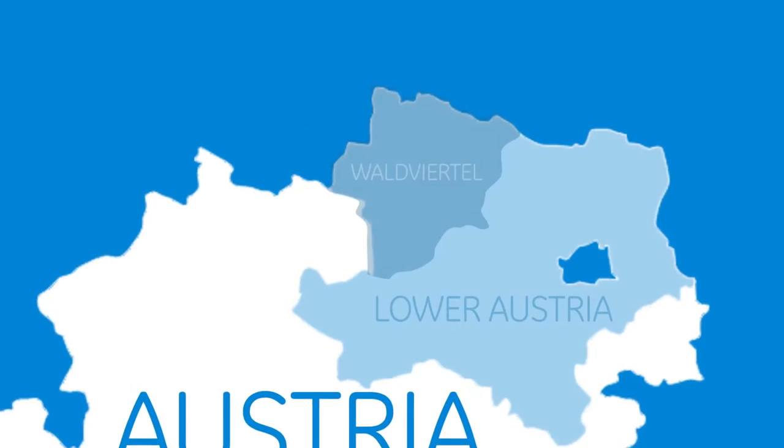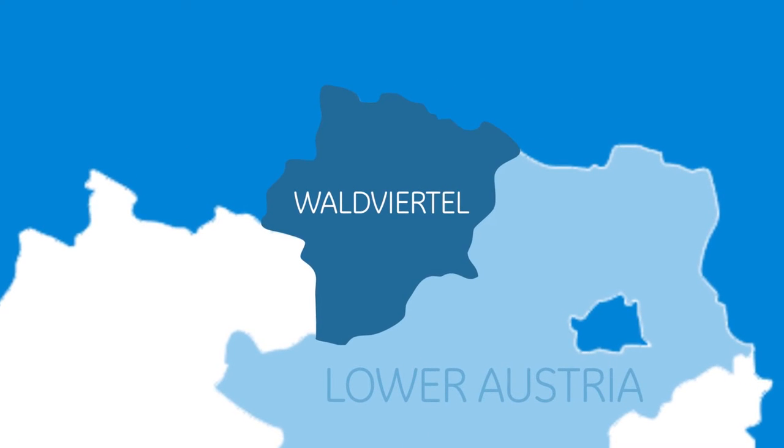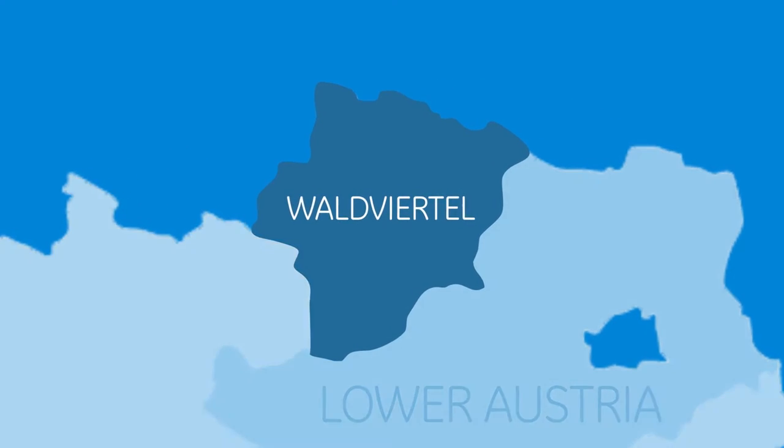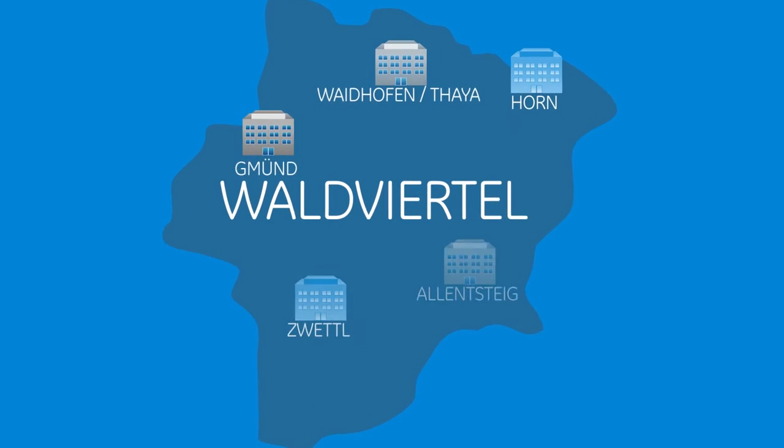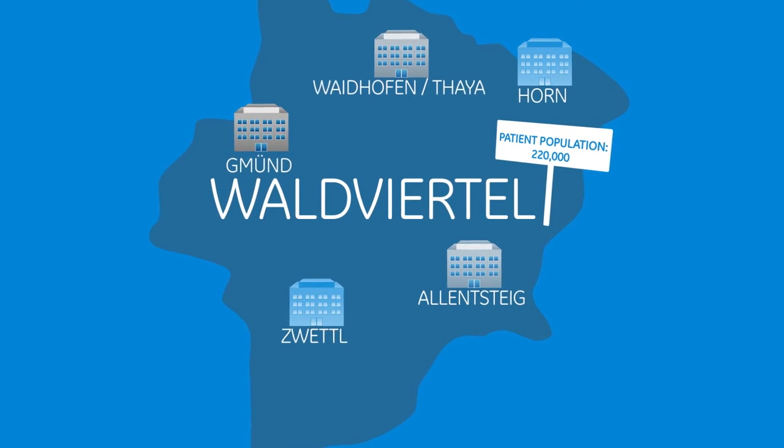Welcome to Vortviertel, a district in Lower Austria. Now meet the hospitals that serve the region's population of approximately 220,000 patients.